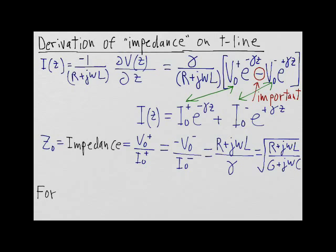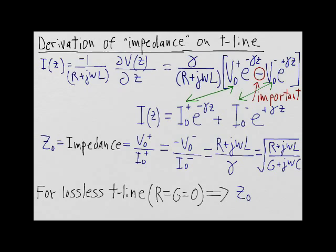For the case of a lossless transmission line, where the series resistance r and the shunt conductance g are both equal to zero, the characteristic impedance z0 simplifies to the square root of l over c, which is a real quantity and is given in units of ohms.